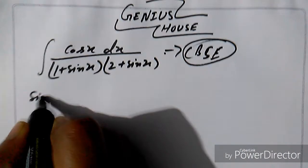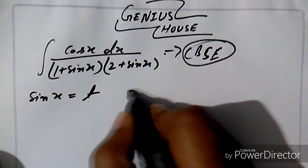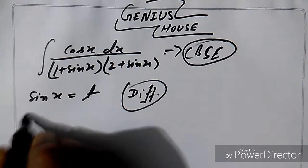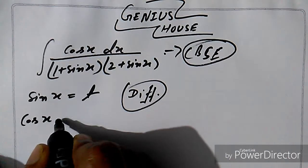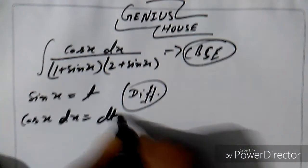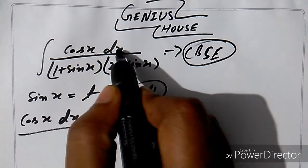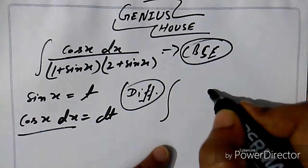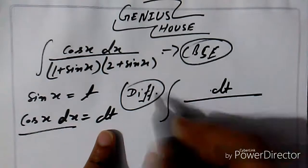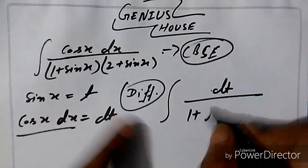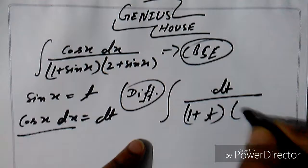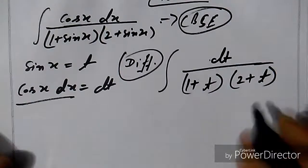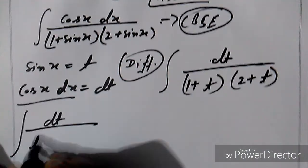First of all, we take sine x equal to t and differentiate it. Then differentiation of sine x gives cos x dx equal to dt. Now you see cos x dx — we replace it by dt. Then 1 plus sine x becomes 1 plus t, and we replace sine x with t here as well.